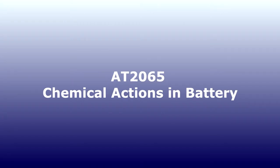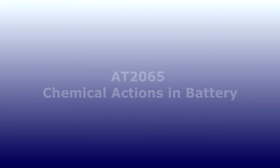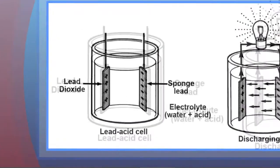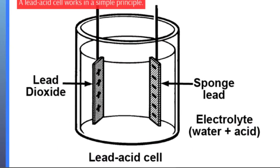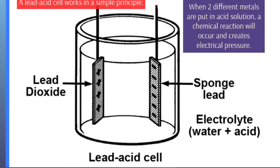Chemical Action and Battery. A lead acid cell works on a simple principle. When two different metals are put in an acid solution, a chemical reaction will occur and creates electrical pressure.